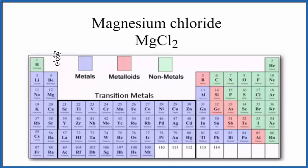So magnesium right here is a metal. Chlorine right here, that's a nonmetal.